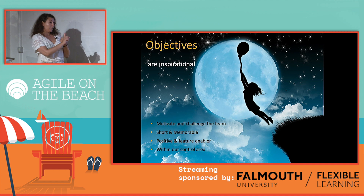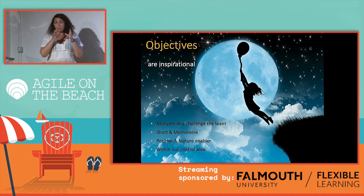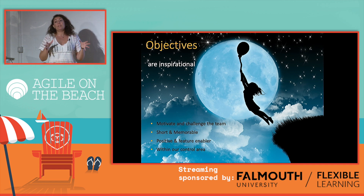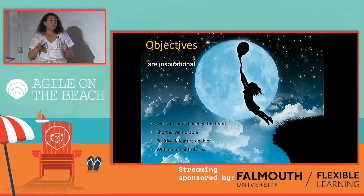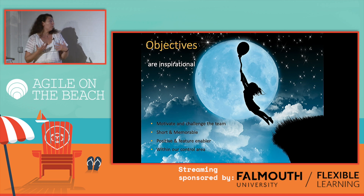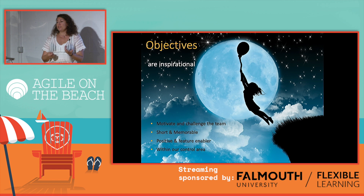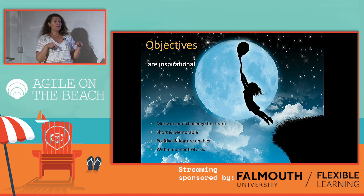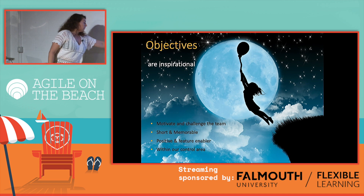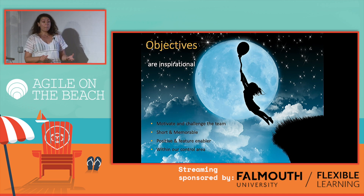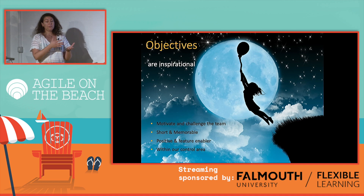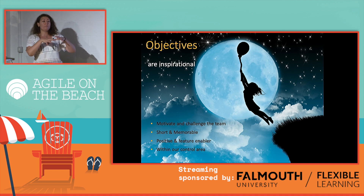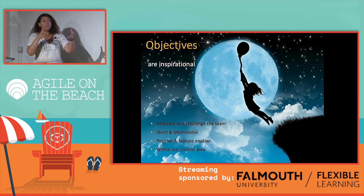Objectives should be positive and a feature enabler — while taking actions, creativeness is really important and the objective should be a feature enabler. And it should be within our control area. This part is really important because generally we create objectives that are not really achievable. We need to think about what is within our control — within our team or our department — and what is achievable.